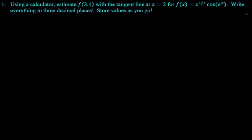Using a calculator, estimate f(3.1) with the tangent line at x equals 3 for the function f(x) = x^(1/3) cos(e^x). Write everything to three decimal places, store values as you go. Alright, so I'm basically going to screenshot my way through this. I have a lot of videos on how to use the calculator. You should definitely check those out. It's skills that you really are going to need as you go.